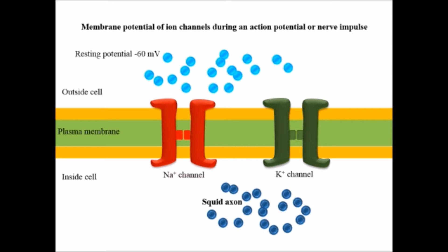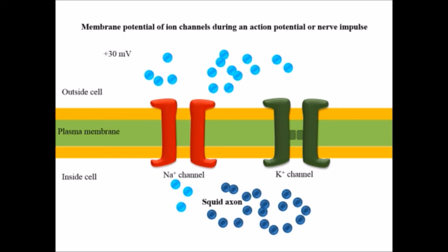At the resting position, when both the sodium ion channel and potassium channel are in the closed position, the resting potential of the membrane is minus 60 millivolts. I have represented light blue color as sodium and dark blue color as potassium ions. This is a voltage-gated example: when the sodium ion channel opens, sodium ions are imported inside the cell, and this leads to a change in the potential difference across the plasma membrane from minus 60 millivolts to plus 30 millivolts.